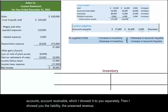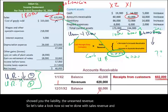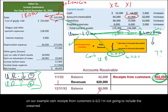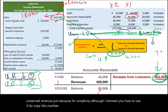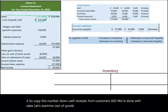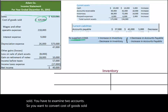We're done with sales. Based on our example, cash receipts from customers is $602,000. Now let's examine cost of goods sold. To convert cost of goods sold to how much we paid to suppliers, you need to examine two accounts: inventory and accounts payable.